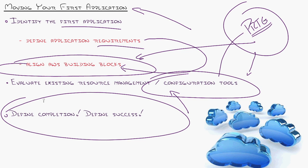Big one: define completion. Define success. Before you ever move file number one, identify what it looks like to be successful. Scope creep becomes a major problem — you start moving this first application and you go, 'Oh wait, it relies on such and such, we've got to move that too.' And before long you're moving everything, not realizing where the end of this road is, and even when you do have everything moved, it's not optimized the right way. So make it clean. Create a project plan. Define what the end of this move looks like.